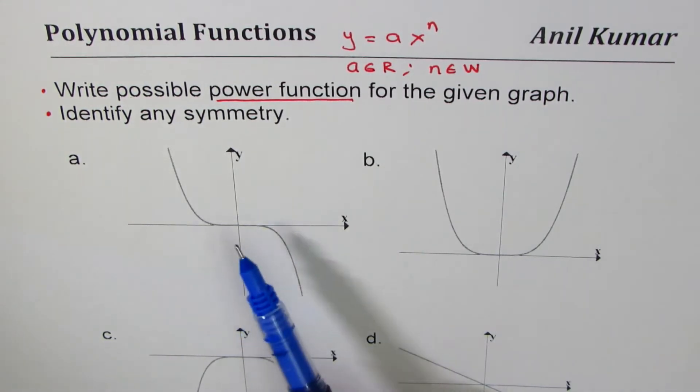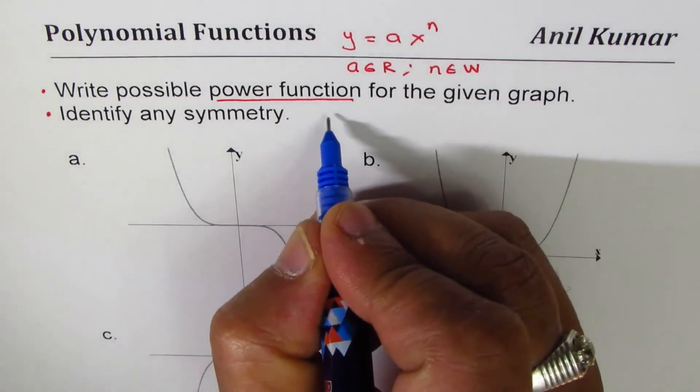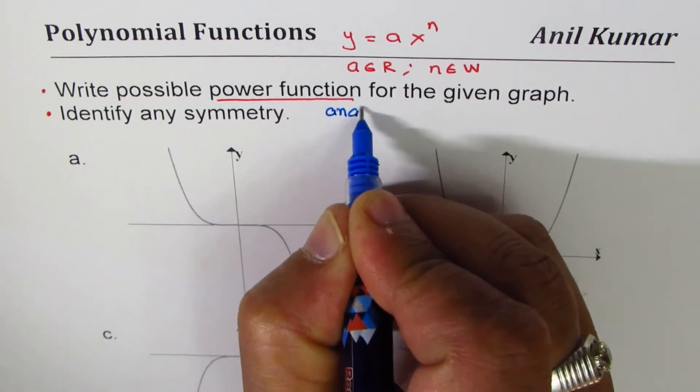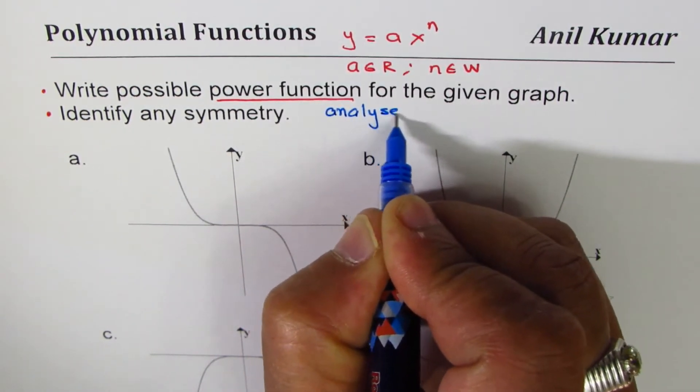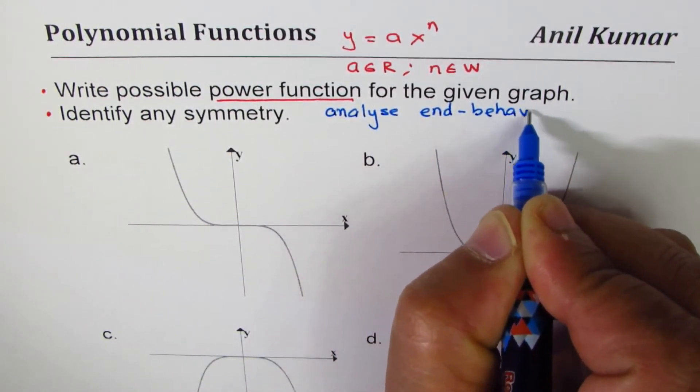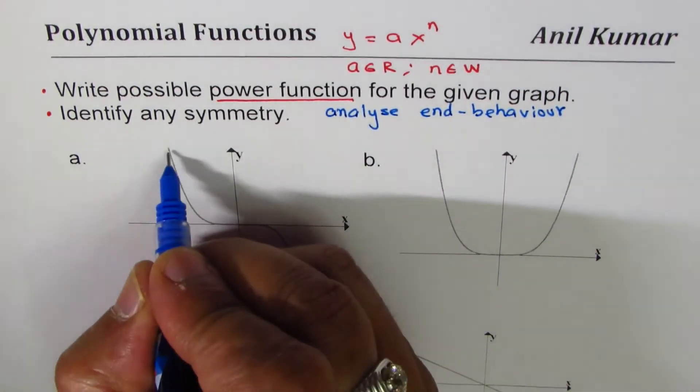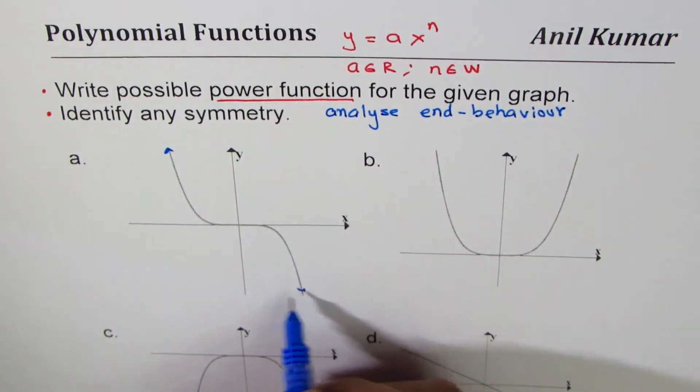The first one here, to write down a power function, it is important to analyze end behavior. So the idea is to analyze end behavior. In this case we see the graph moves to opposite ends, that means odd degree. So we have odd degree, opposite ends.